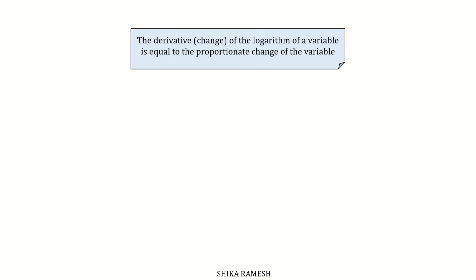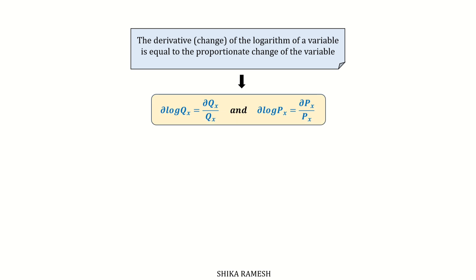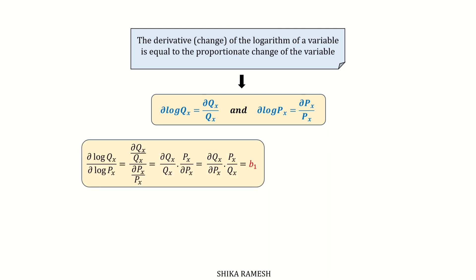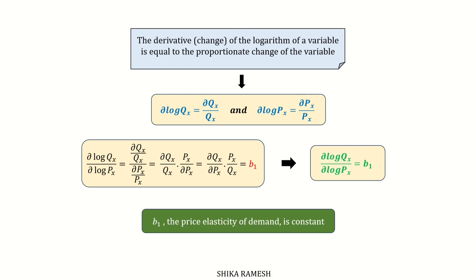This can also be written in logarithmic form. Since the derivative of the logarithm of a variable equals its proportionate change — i.e. ∂ log qx = ∂qx/qx and ∂ log px = ∂px/px — we can substitute and write ∂ log qx / ∂ log px = b1. Hence, it is proved that b1, the price elasticity of demand, is constant.